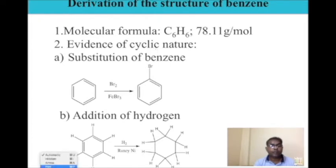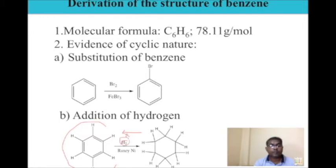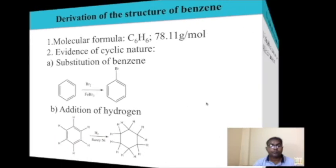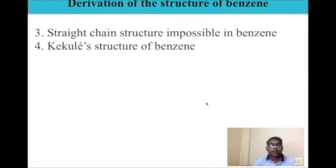Let us see this reaction. If you react benzene with hydrogen gas and Raney nickel, you will get cyclohexane. If you go retrospectively, since benzene is cyclic, there is no cyclization reaction in the presence of hydrogen gas. The formation of the product cyclohexane indicates that benzene is a cyclic molecule.